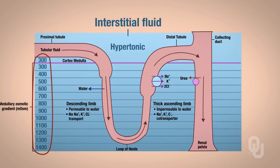Then we have the countercurrent multiplier system. This is a really good animation of it — it's such a dynamic process that it's easier to watch how the filtrate moves through and how it affects the osmolarity of the lumen in the descending and ascending limbs at the same time. I would still be happy to help you with the countercurrent multiplier system if you don't understand it.